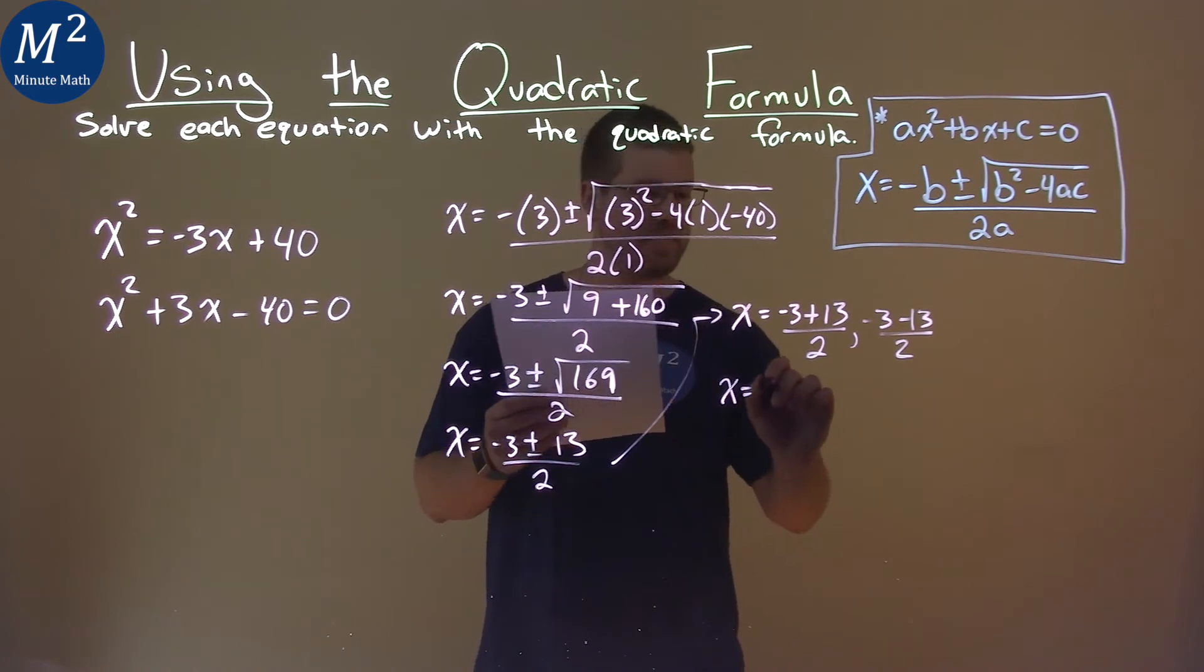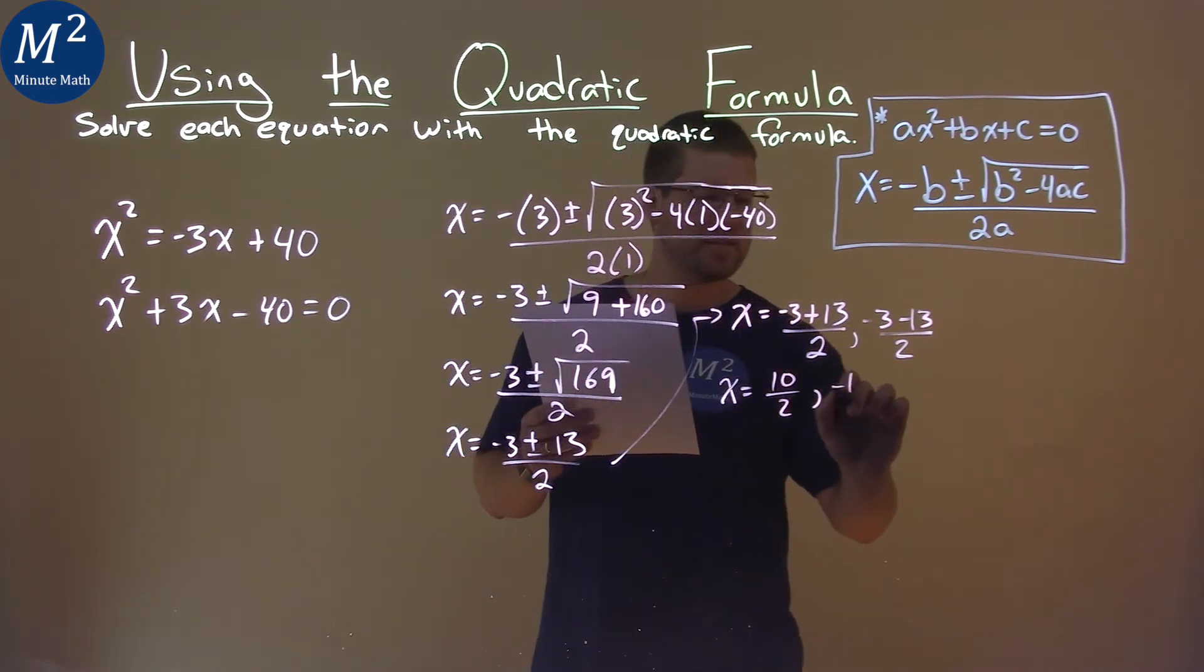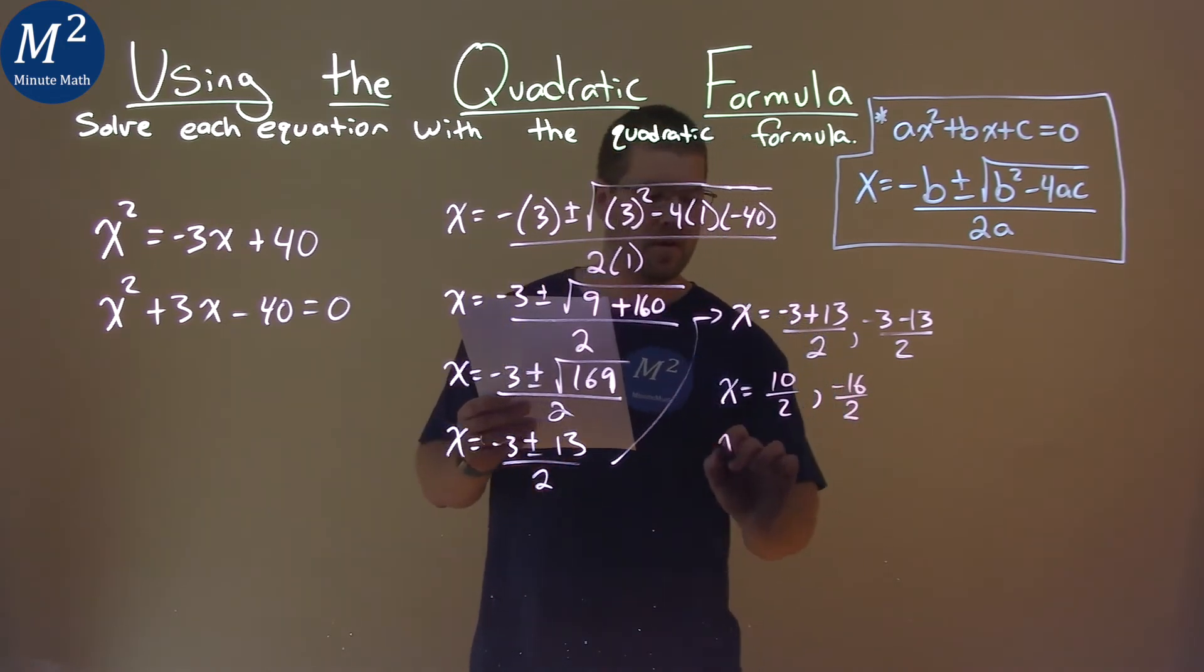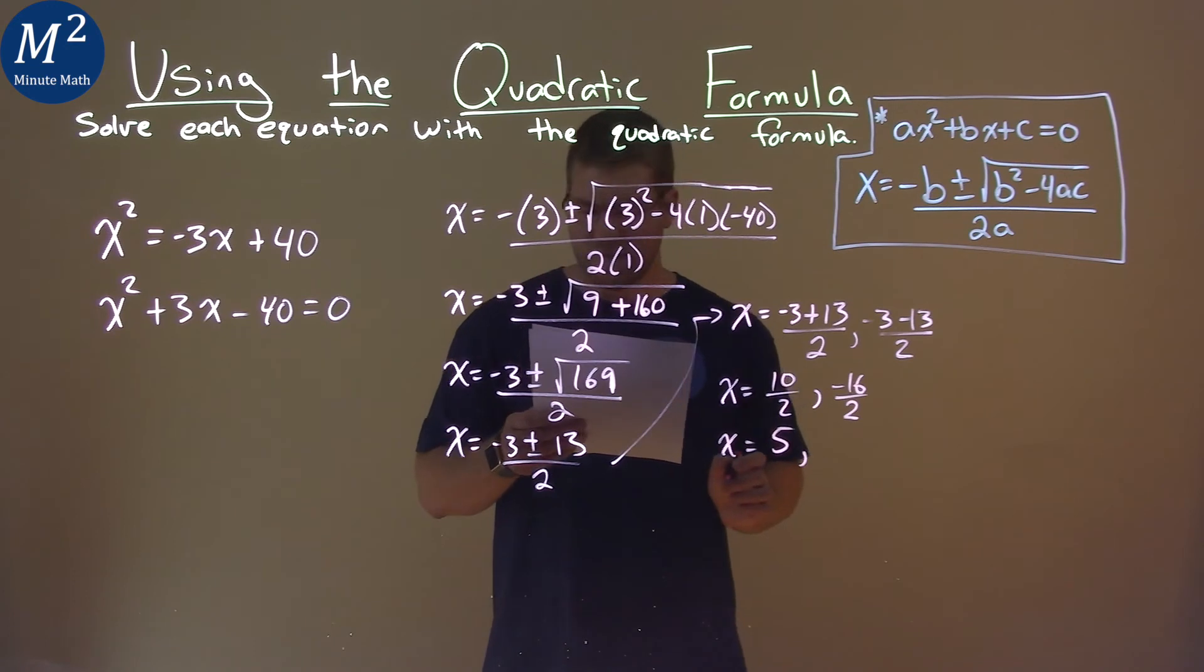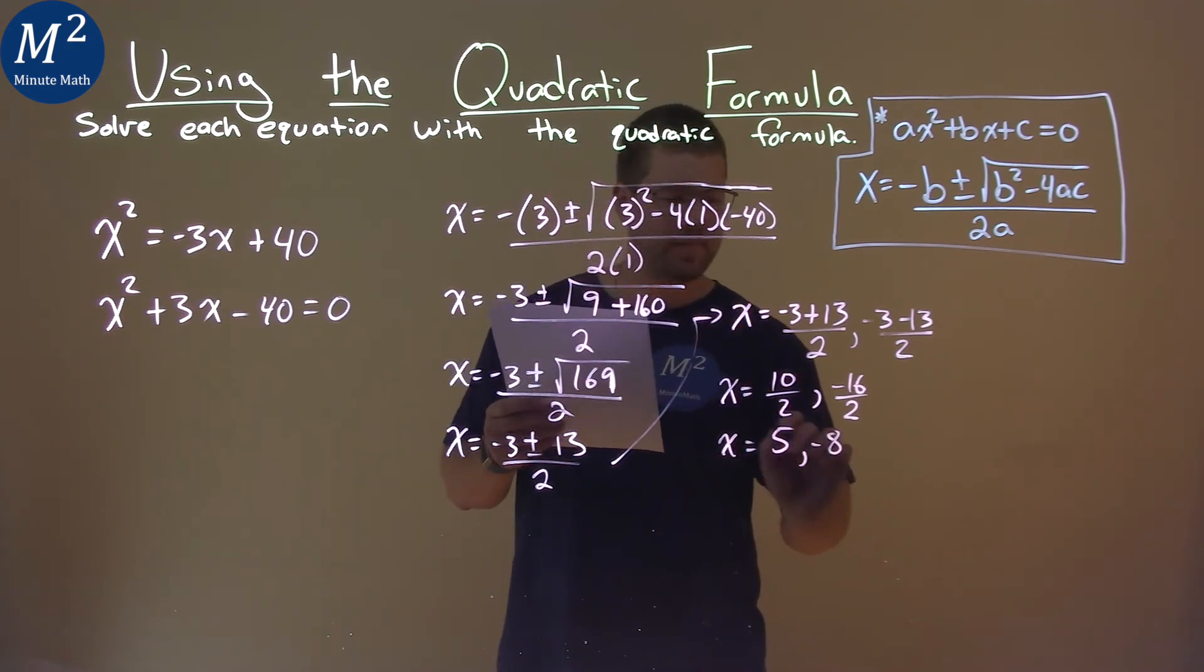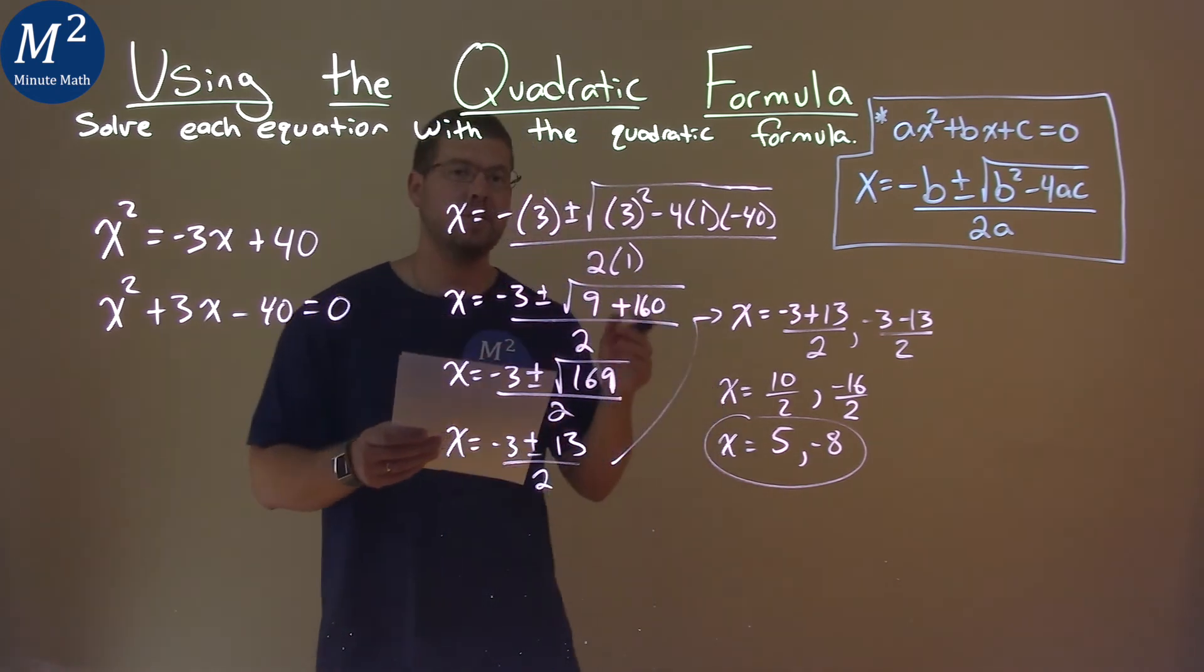over 2, and negative 3 minus 13 is negative 16, over 2. So, we'll find each one of these. 10 divided by 2 is 5, and negative 16 divided by 2 is negative 8. And so, my two solutions here are x equals 5 and negative 8.